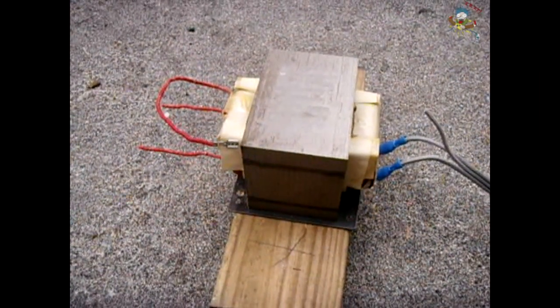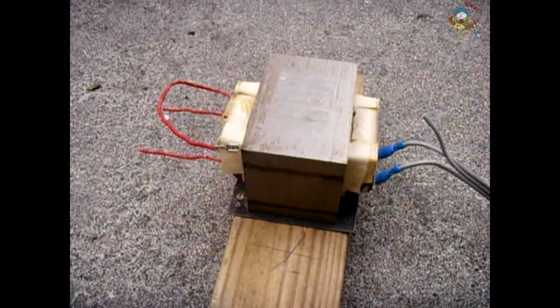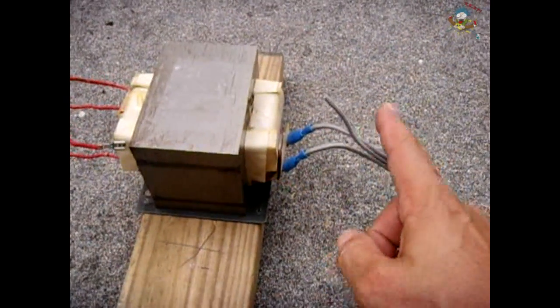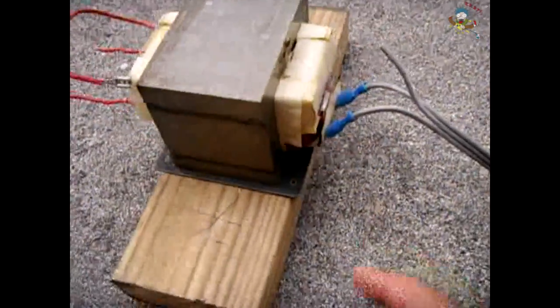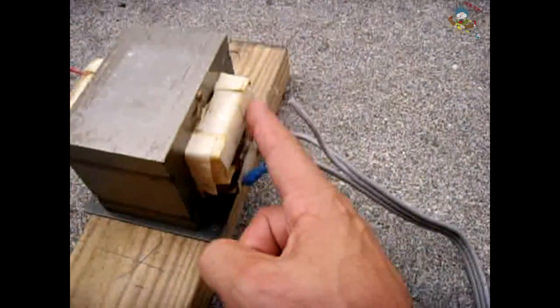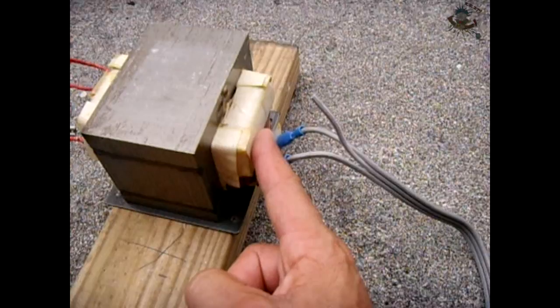In this video I'm going to power up this 2000 volt microwave oven transformer. The primary is 110 volts and the secondary is made up of a lot of turns of very thin copper wire.